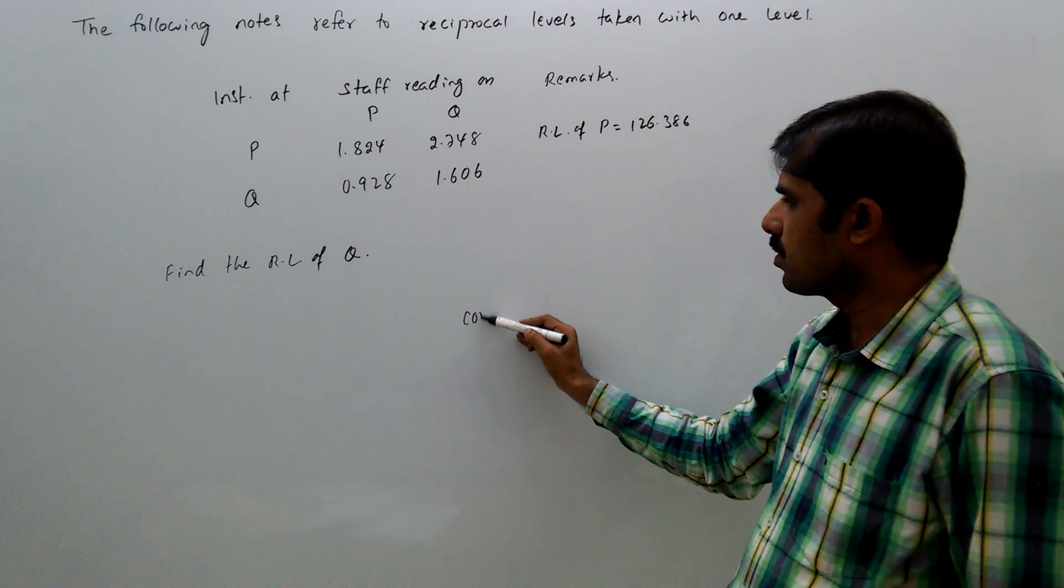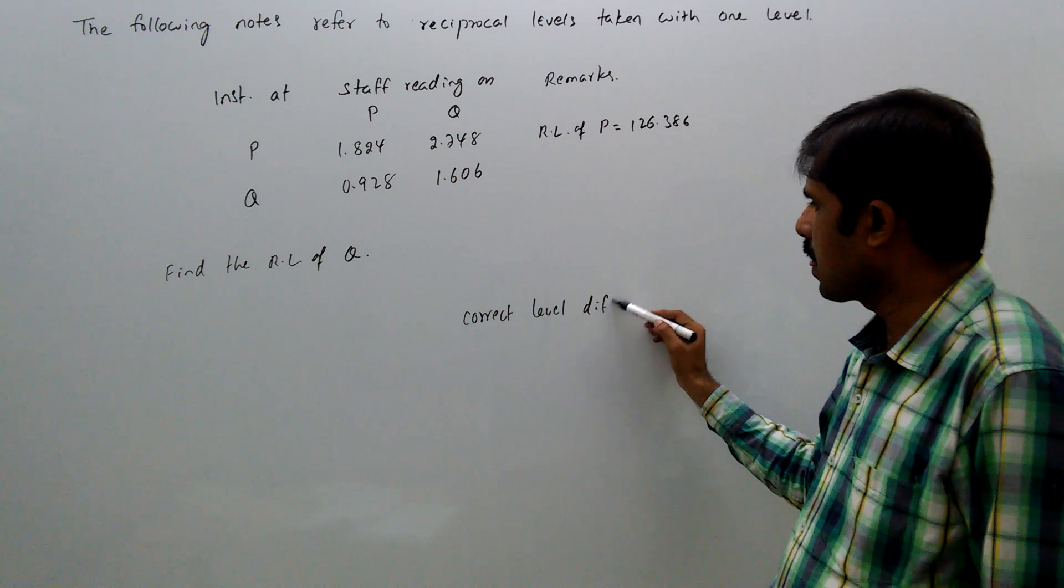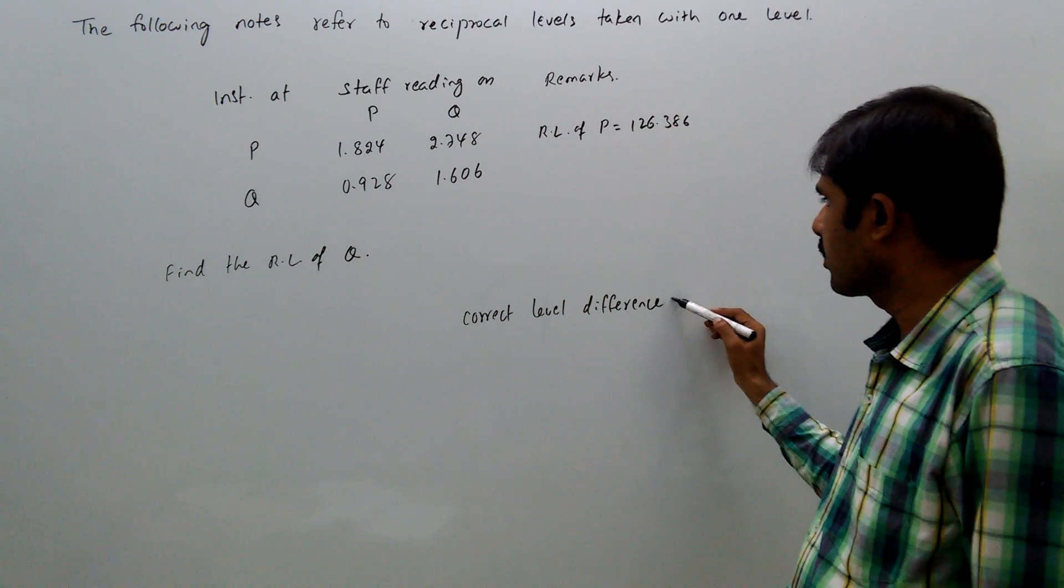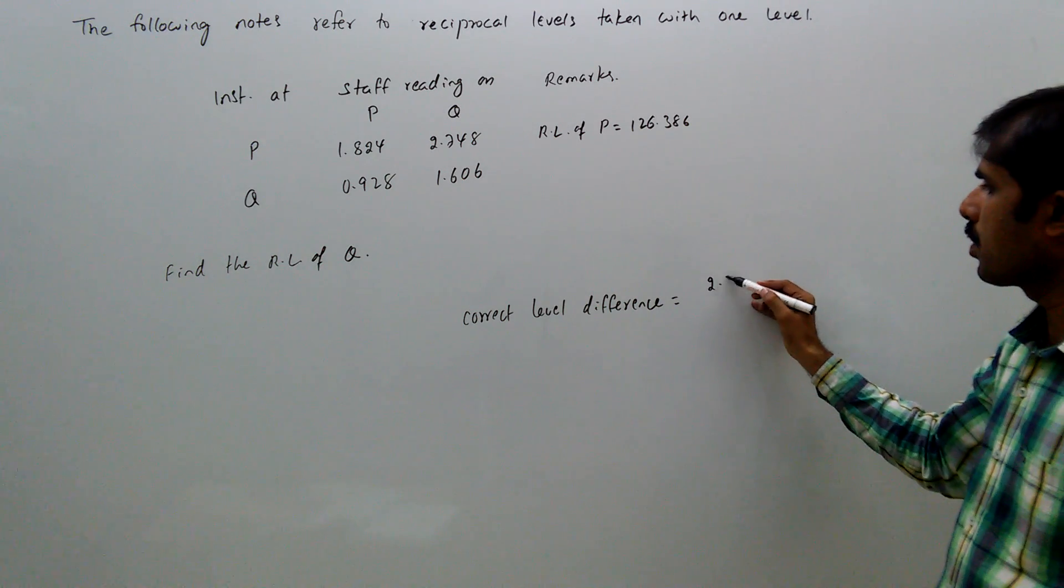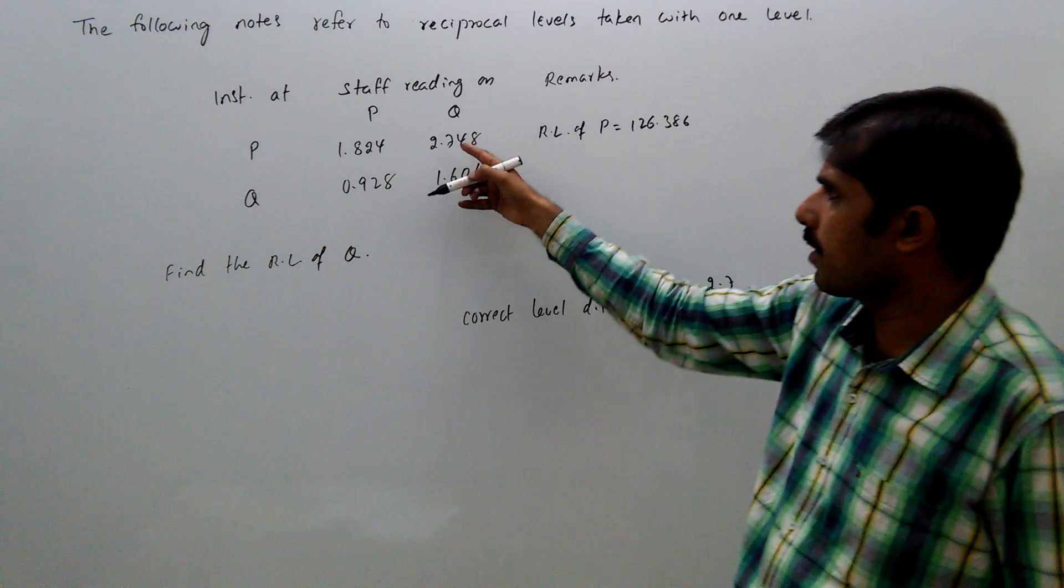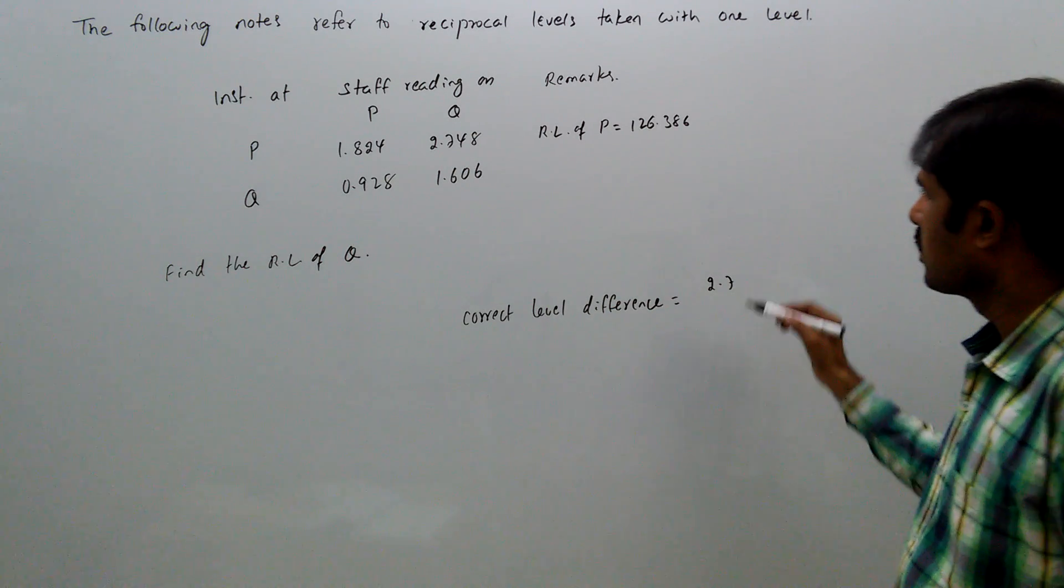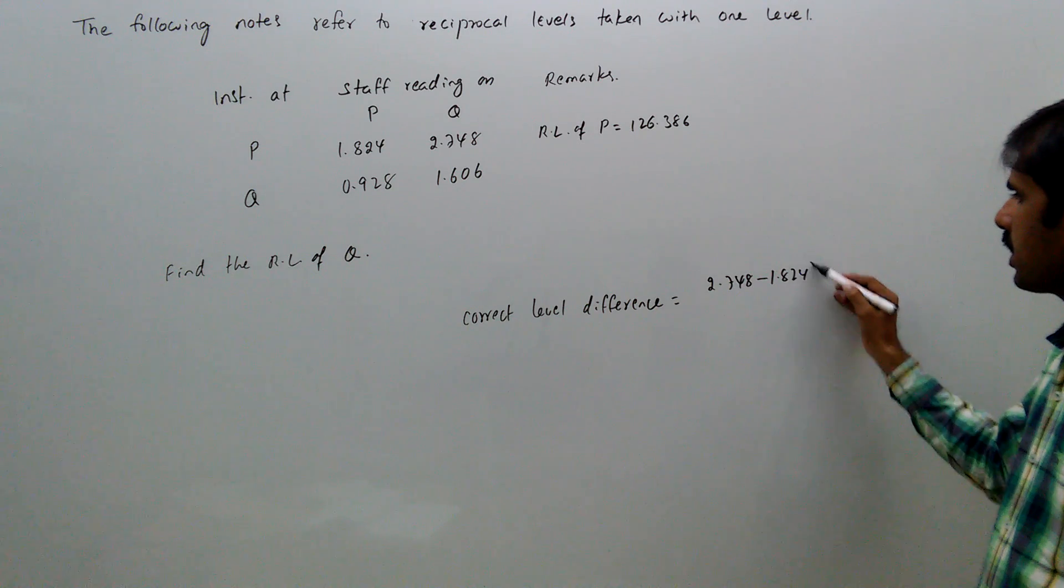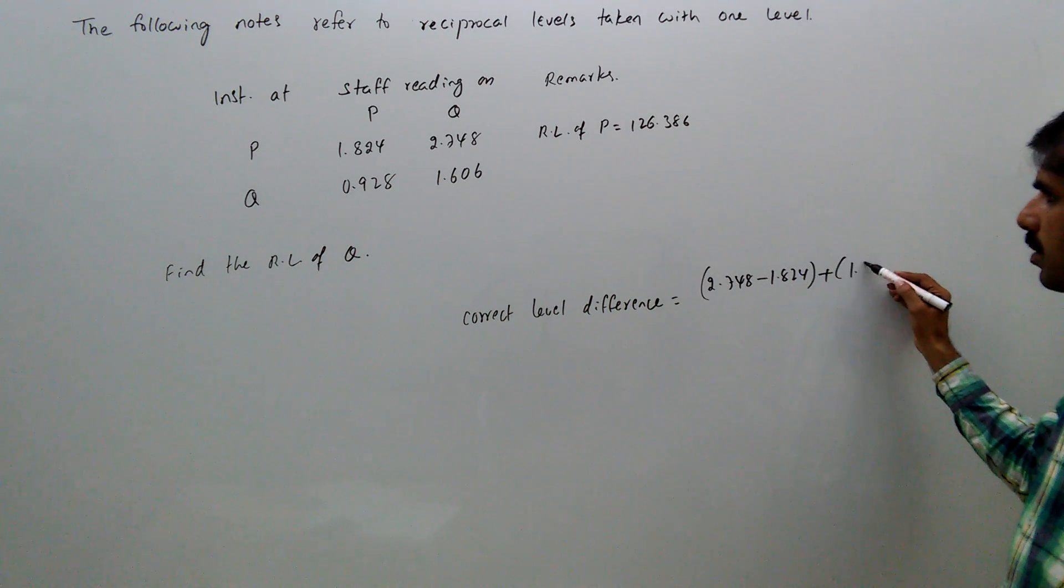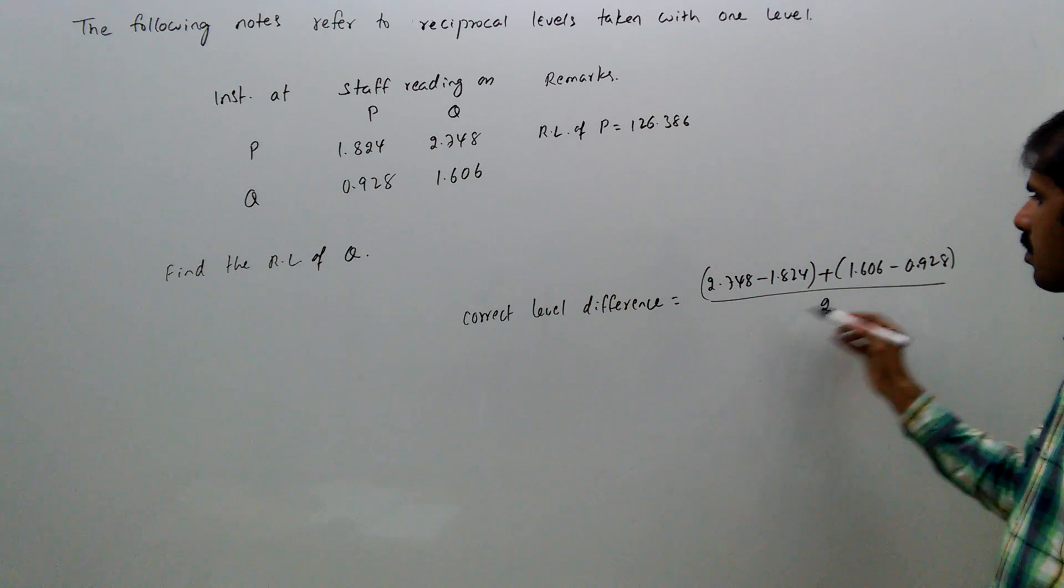So correct level difference equals - P is at lower level, that is why it is having higher value - 2.748 minus 1.824 plus 1.606 minus 0.928, divided by 2.